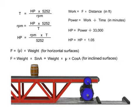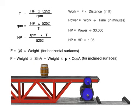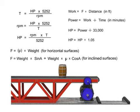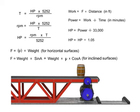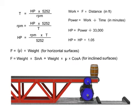The relationships among horsepower, speed, RPM, work, power, and force allow technicians and system designers to determine the appropriate characteristics of motors, cylinders, and other fluid system components required to operate any system.